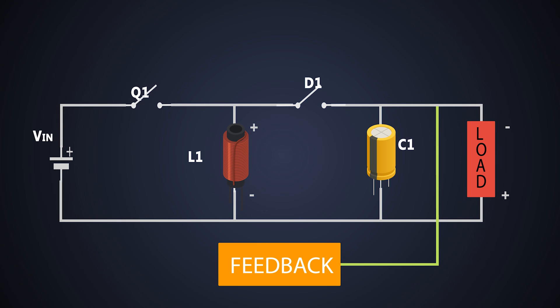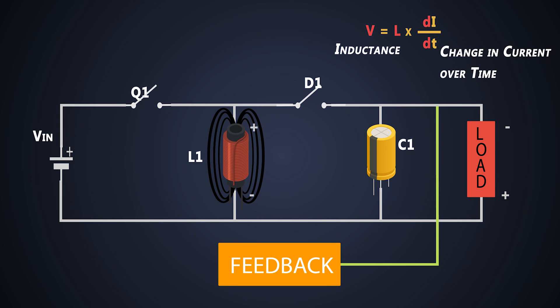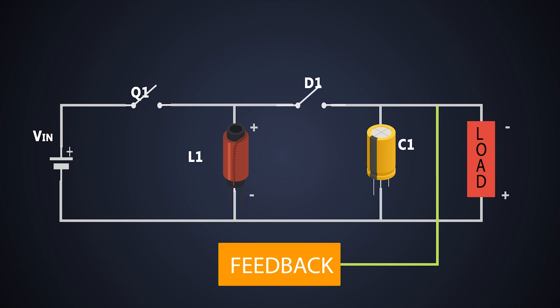Now, the MOSFET is turned off. Due to sudden drop in the current, the inductor induces the flyback voltage, which has a magnitude of V equals L di by dt, where L is the inductance and di by dt is the change in current over time. During this time, the polarity of the inductor reverses, and current starts flowing through this direction. So due to that, the diode is forward biased.